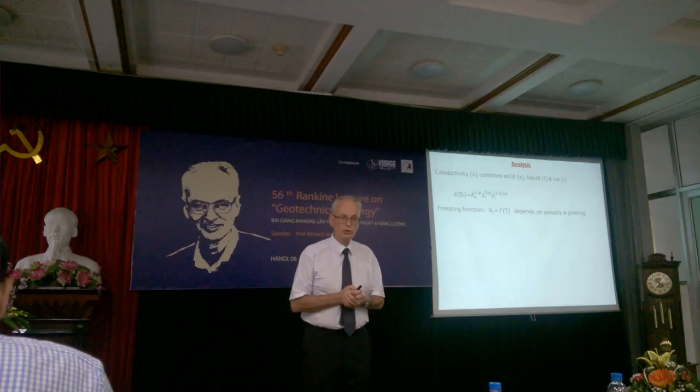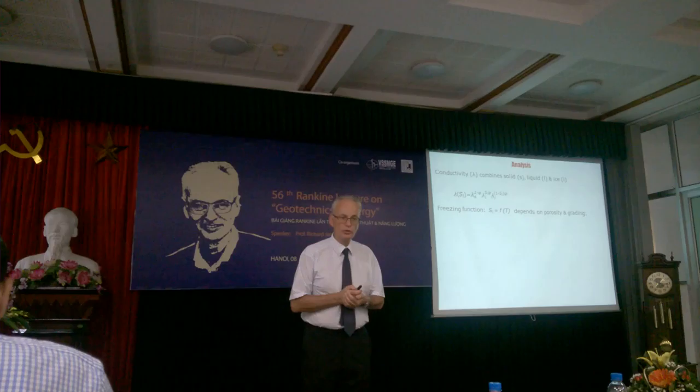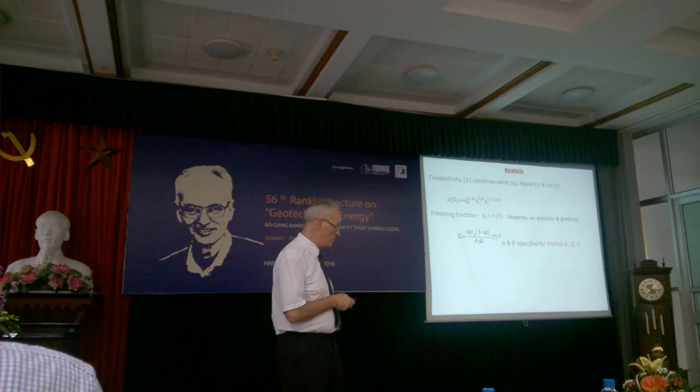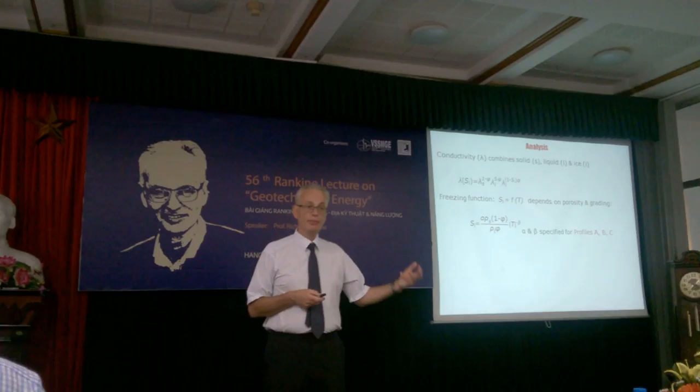The freezing function is obtained empirically as a function of porosity and temperature. Here's the equation, and the empirical terms, alpha and beta, vary with our profiles because they depend on porosity and gradient.